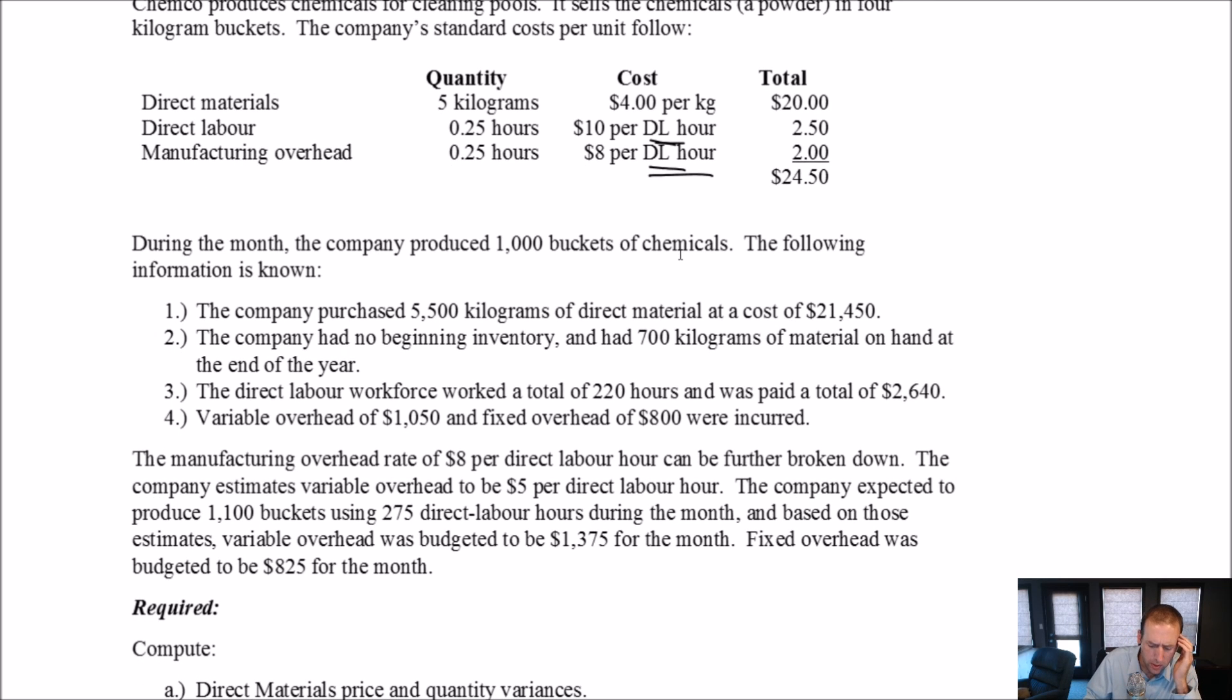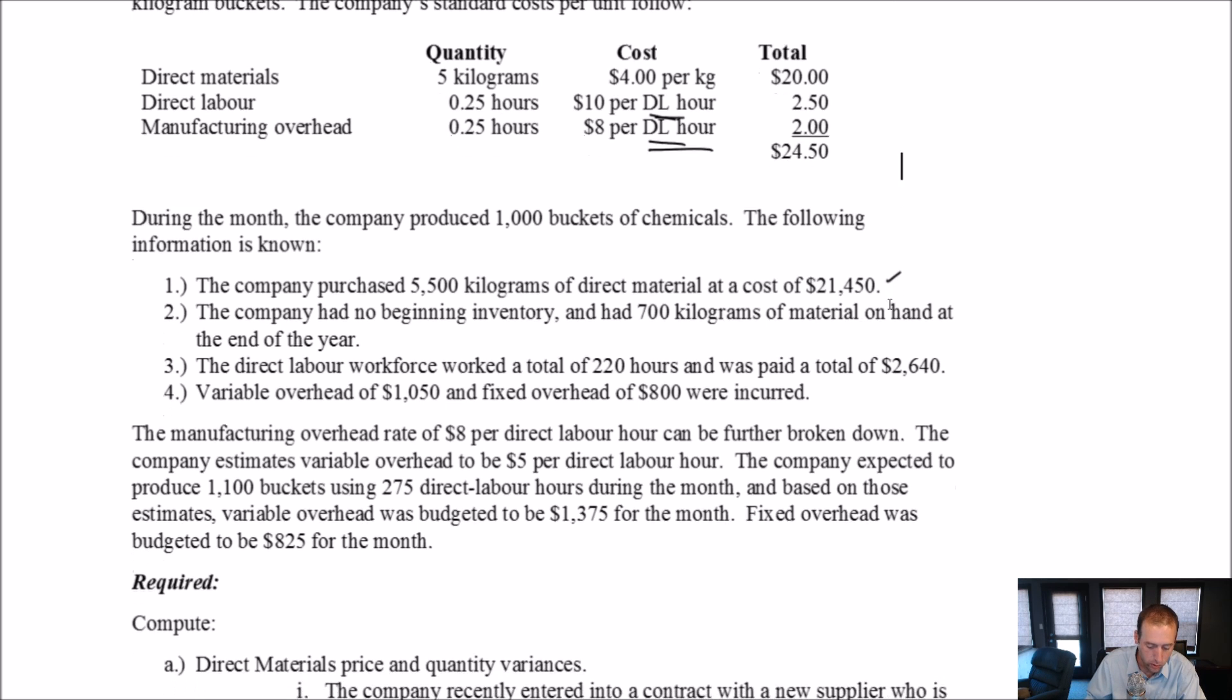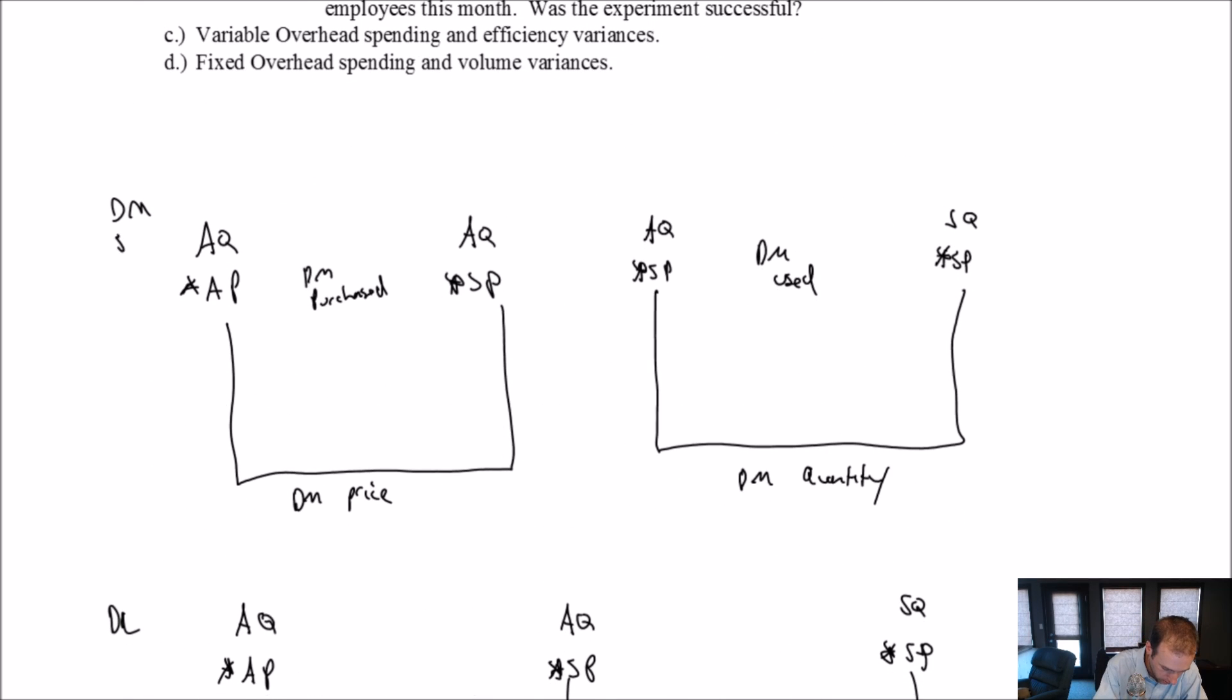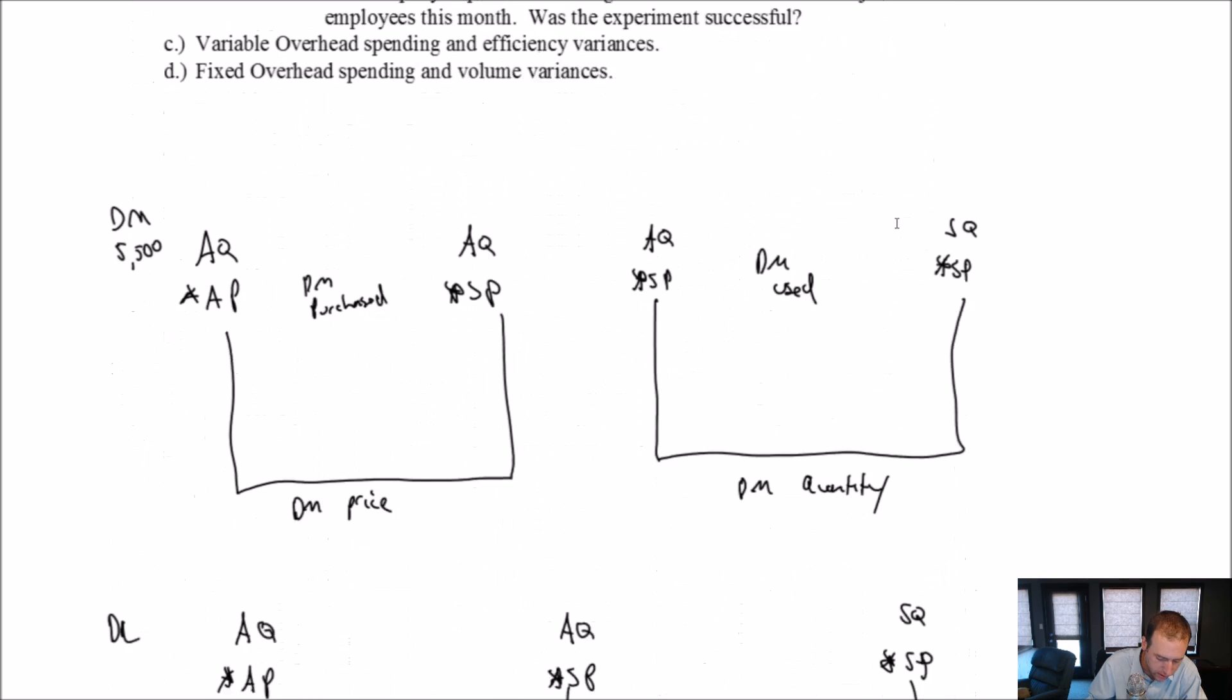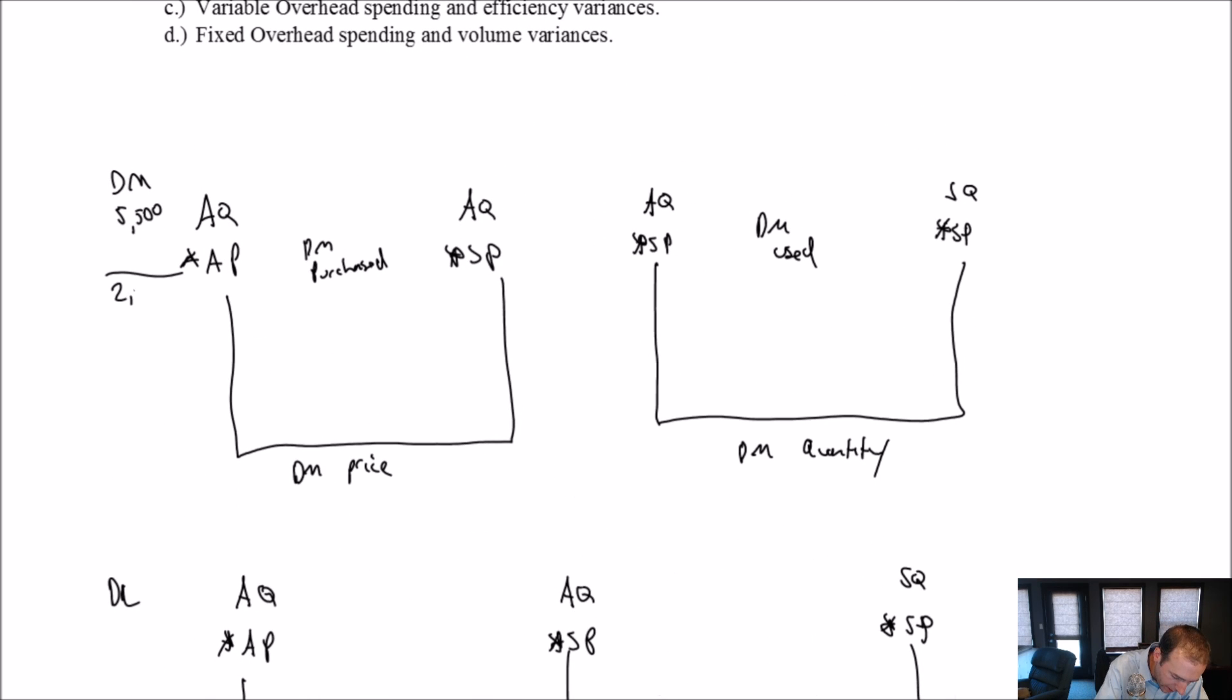And so when overhead is driven by direct labor hours, there's going to be a relationship between our overhead and direct labor variances, because they have the same cost driver. They're both using the same numbers of hours to drive their variance calculations. Okay. It says during the month, the company produced a thousand buckets of chemicals. Like a bucket is our unit, I suppose. The following information is known. The company purchased 5,500 kilograms of direct material at a cost of $21,450. Okay, this is my direct materials AQAP information, right? My actual quantity purchased is 5,500 kilograms. My actual price per kilogram, I don't know, but I know the total is $21,450.